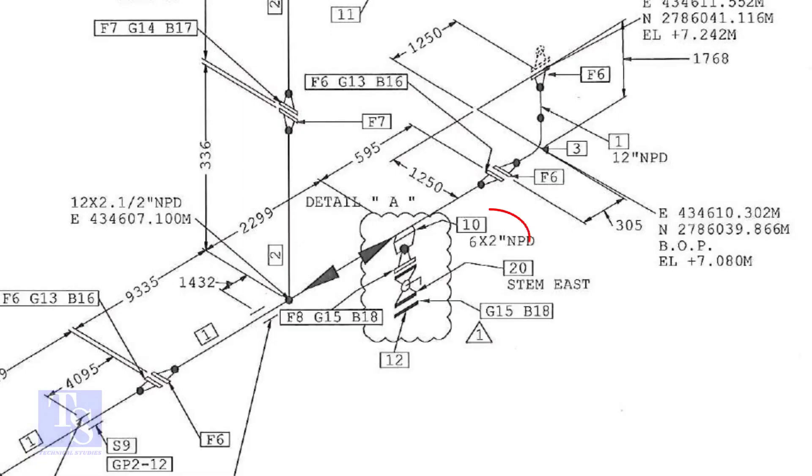In this drawing, the size of the weld-olet is 6 inch into 2 inch. Let us check what is item number 10 in the description.